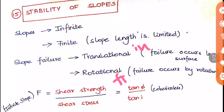Here comes the factor of safety. The factor of safety we are going to see is for infinite slope. The factor of safety against translational failure is given as shear strength divided by shear stress — denoted as S by tau — and it can also be written as tan φ by tan i. These are the two formulas used for finding the factor of safety against translational failure in the infinite slope.